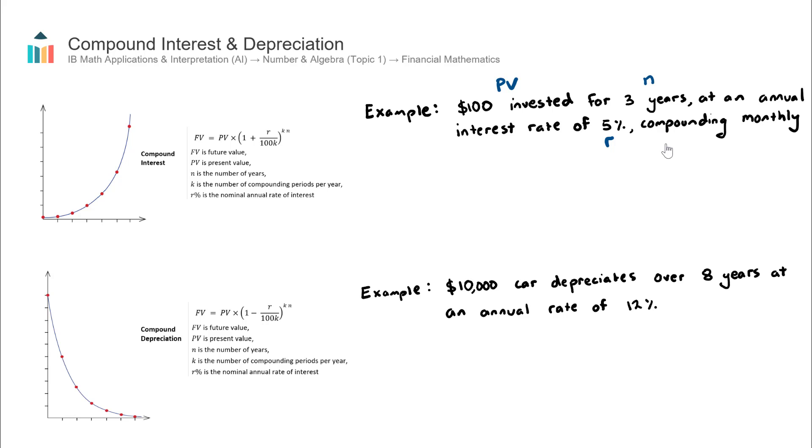This part here is probably the hardest part in the formula. This involves the K value, which is number of compounding periods per year. You need to think about this one. If it compounds monthly, there are 12 months in a year, so therefore my K value will be 12.